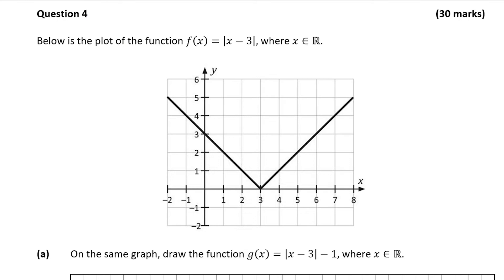Hello and welcome to the video, this is Matthew and we're going to look at question 4, which is a 3D mark question on algebra. We're showing the plot of the function f of x which is equal to the absolute value of x minus 3. The absolute value basically means that whatever value we get it must be positive, so if we get a negative value we just get rid of the negative sign and it turns into the positive value.